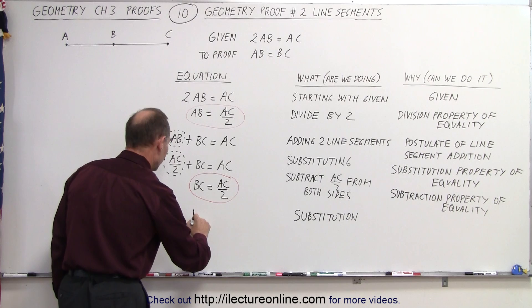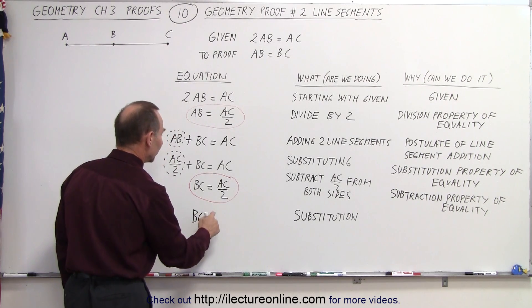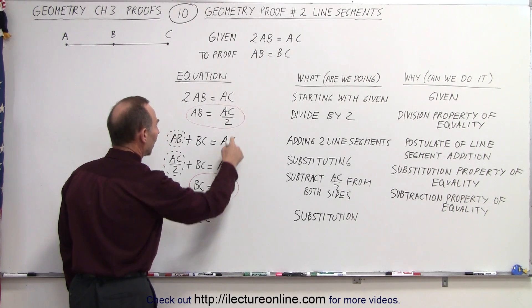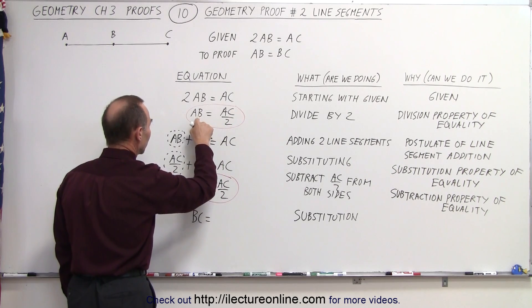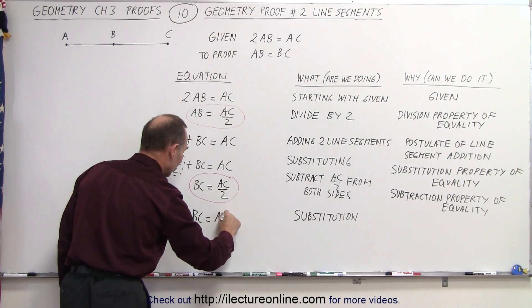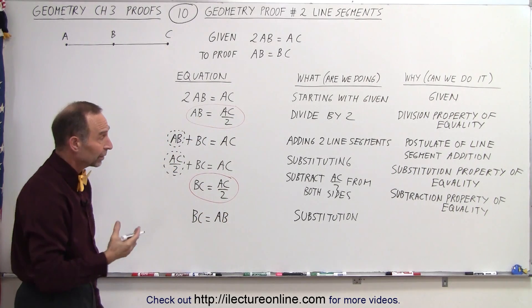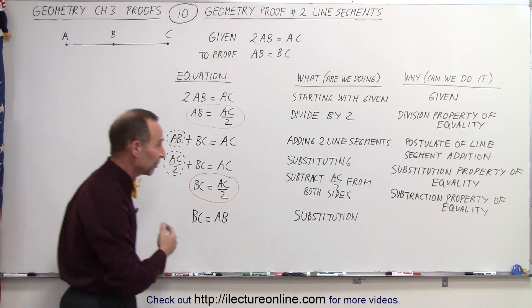So this then becomes BC is equal to, instead of writing AC over 2, I write what AC over 2 is equal to, namely AB. And why can I do that? Well, that's what we call the substitution property of equality.